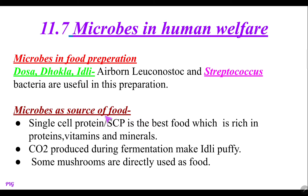Microbes as a source of food: actually single cell protein, commonly known as SCP, is the best food which is rich in proteins, vitamins and minerals. Carbon dioxide is produced during fermentation, and it is implemented in the process — for example, it makes idli puffy, forming spongy idli. Some mushrooms are directly used as food material.